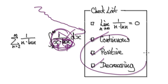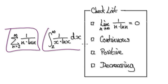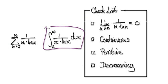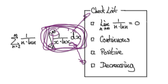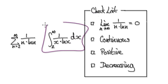Because these three conditions have been satisfied, we can apply the theorem: if the integral diverges, then the series diverges; if the integral converges, then the series converges. So now it just comes down to determining whether the integral will diverge or converge. Let's integrate this from 2 to infinity.